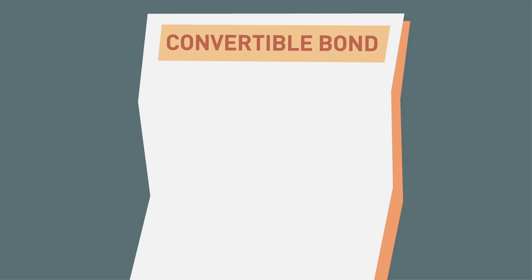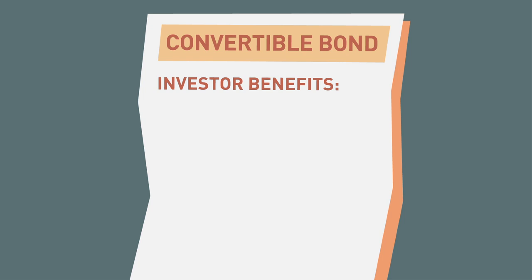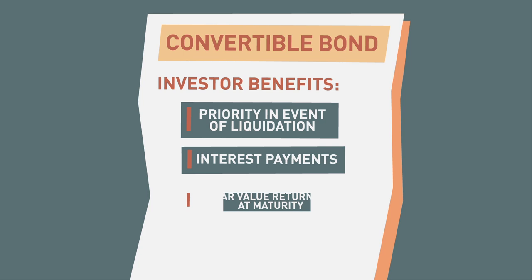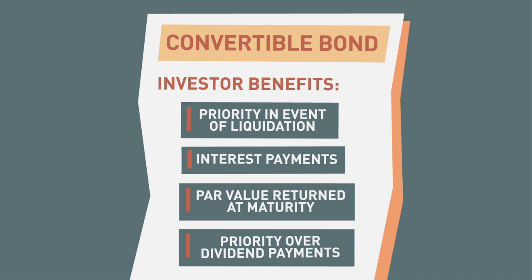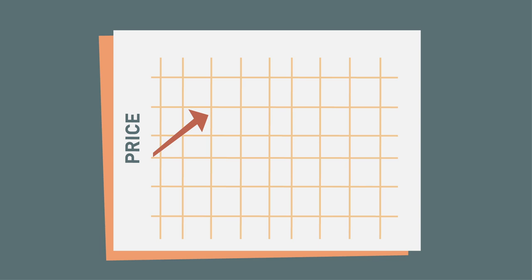Sharing qualities of both fixed income and equity securities, convertible bonds offer investors some additional unique benefits. For instance, bondholders that have not initiated a conversion maintain their precedence over common stockholders in terms of liquidation. Also, if the security is not converted, a convertible bond continues to pay a fixed rate of interest and the par value is returned at maturity, except in cases of default. Typically, these interest payments have a higher priority of payment than the dividend payments to which holders of common stock may be entitled.